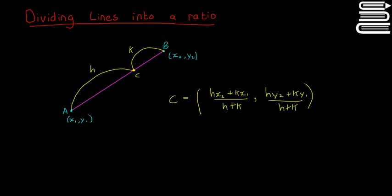So say, for example, you have your point A, your point B here, and you have a line in between them. Say if you want to divide that line up into a ratio H to K, that may sound like a weird thing to say, but they can mean anything.